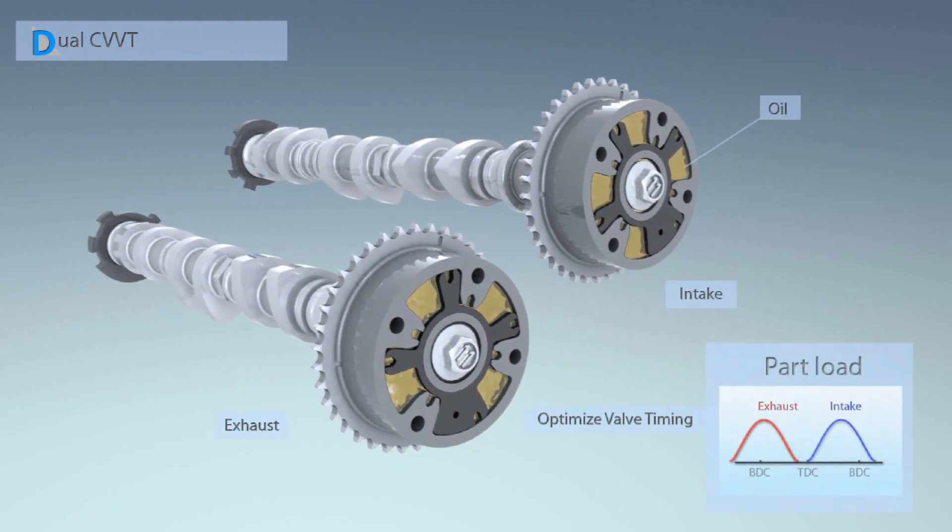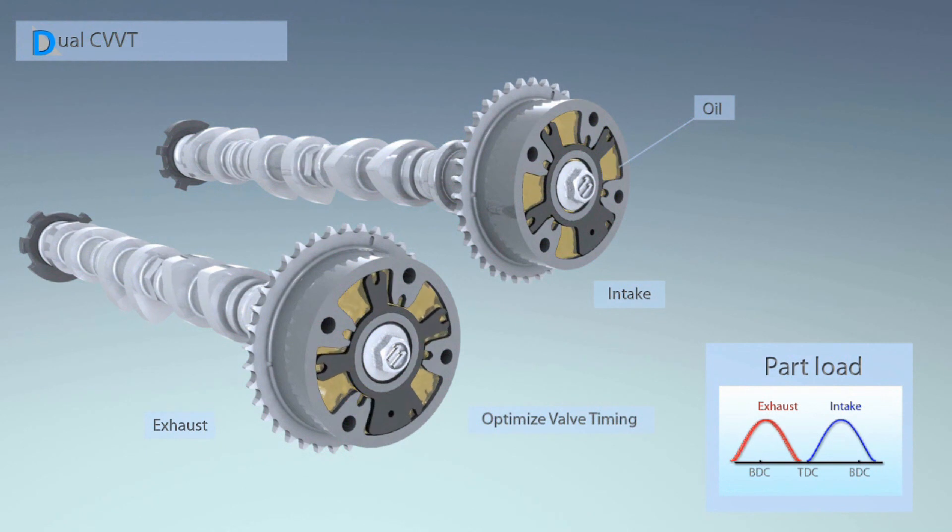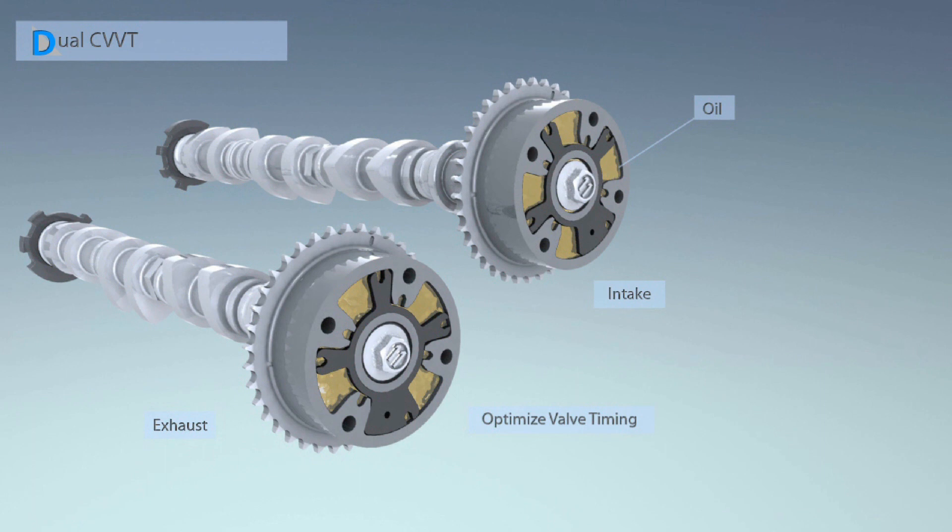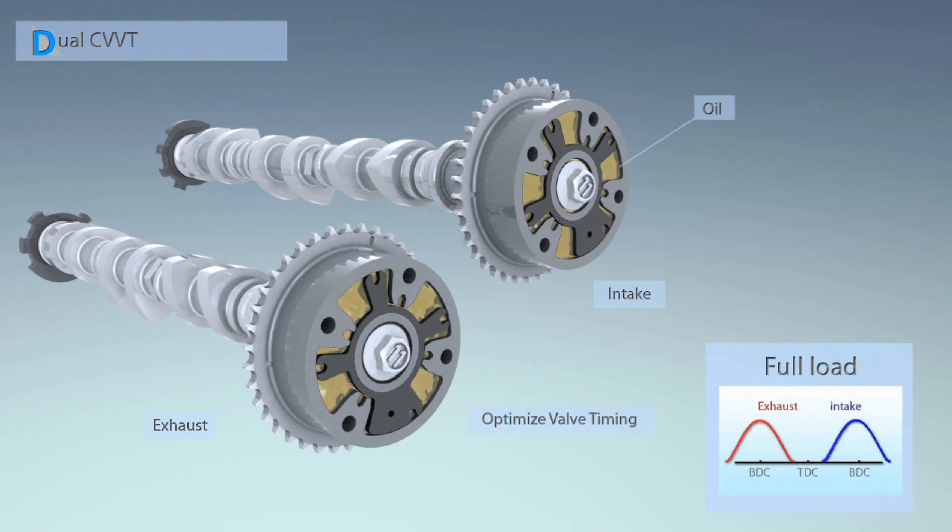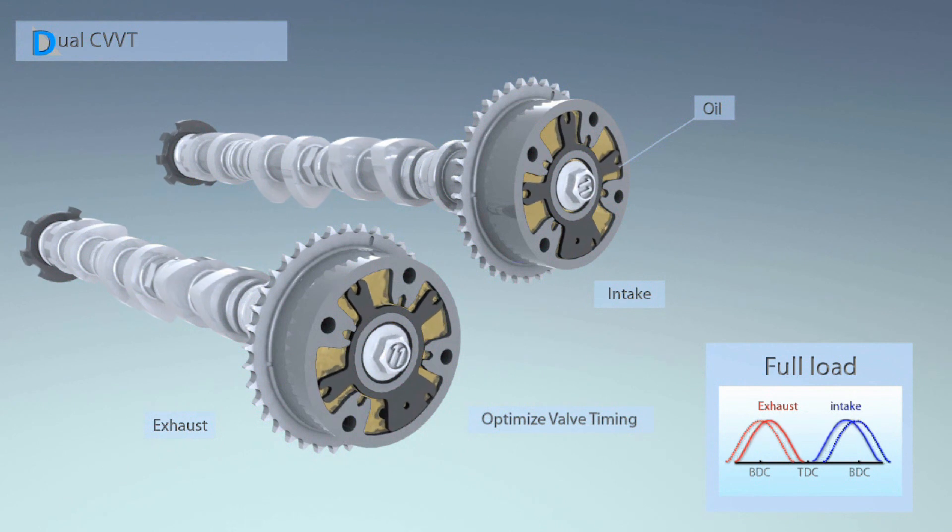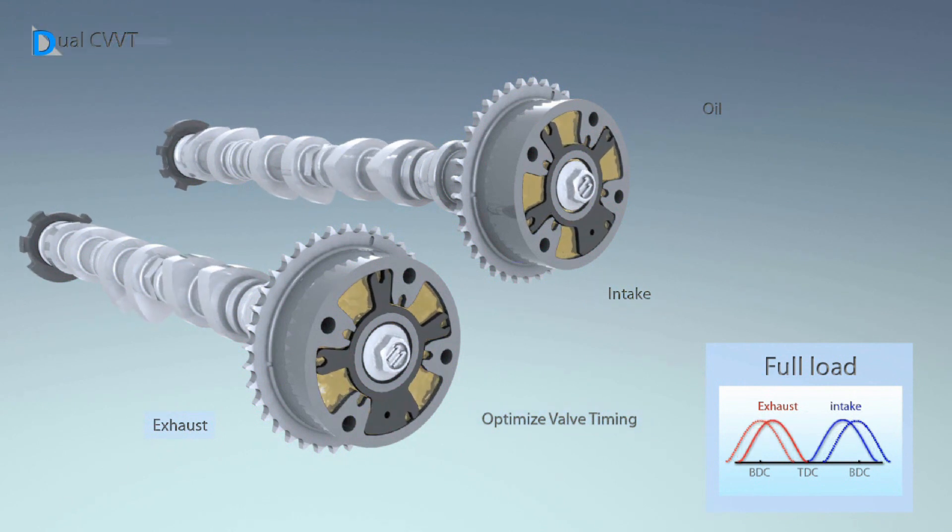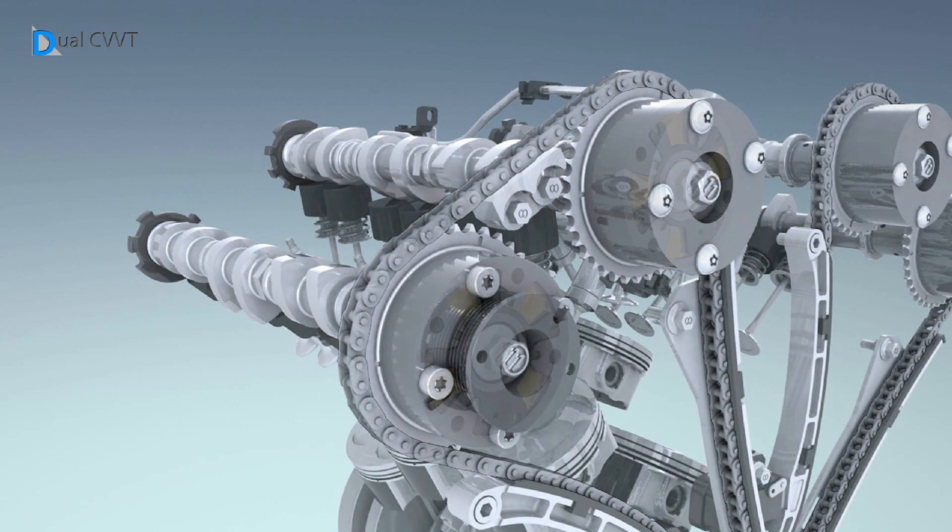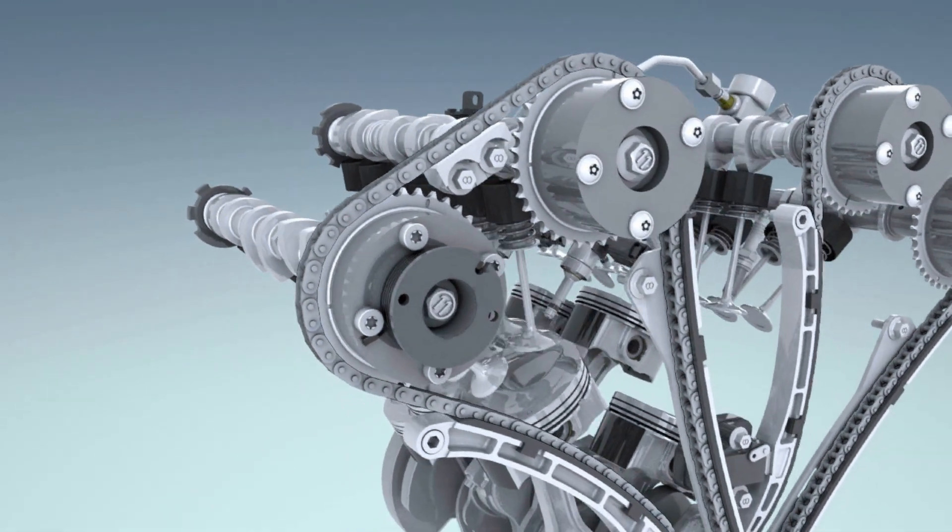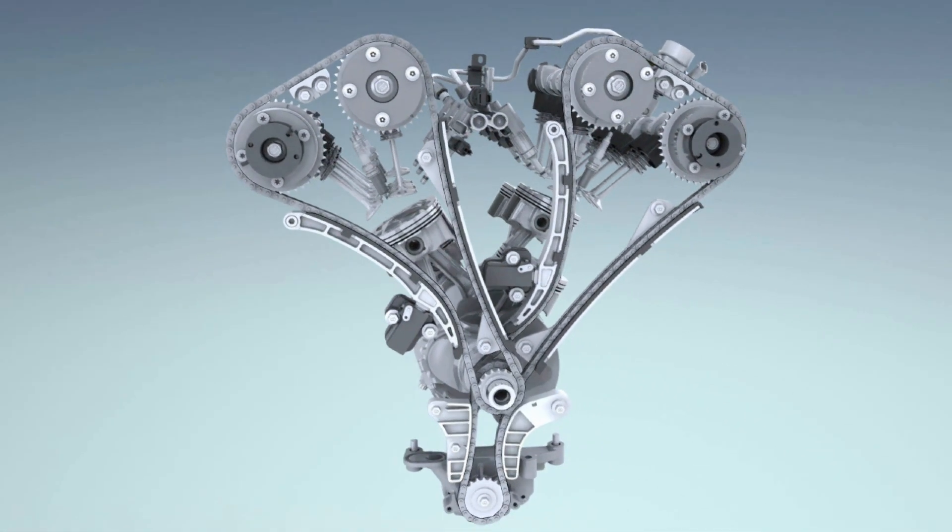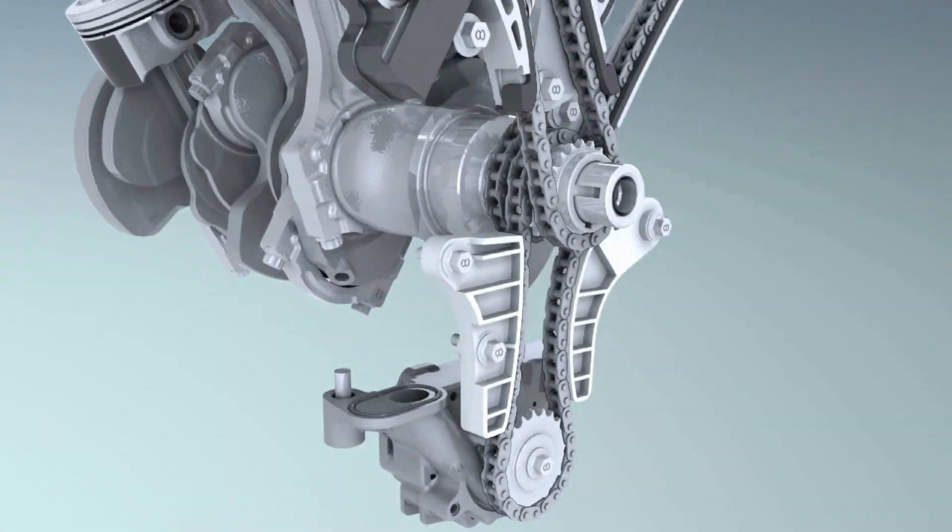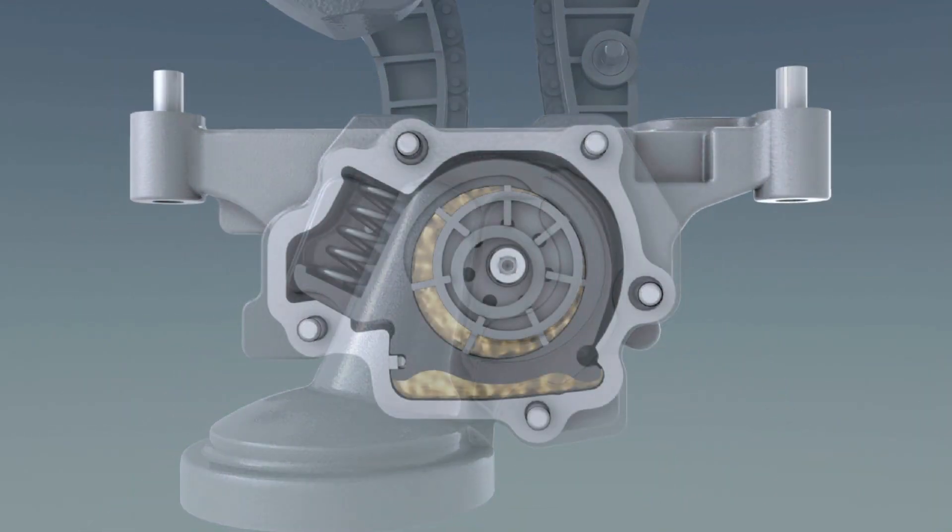Dual CVVT opens and closes the valves at the optimal time, thus achieving high performance, fuel economy, and low exhaust emissions. CVVT operates with hydraulic pressure and optimizes the opening and closing timing of the valves. The exhaust valves are retarded to increase internal exhaust gas recirculation, improving fuel economy and exhaust gas emission.